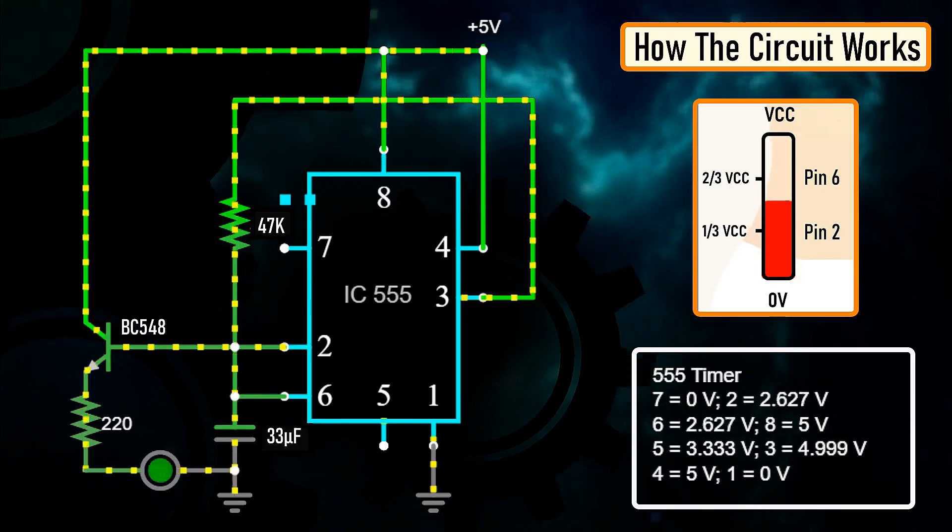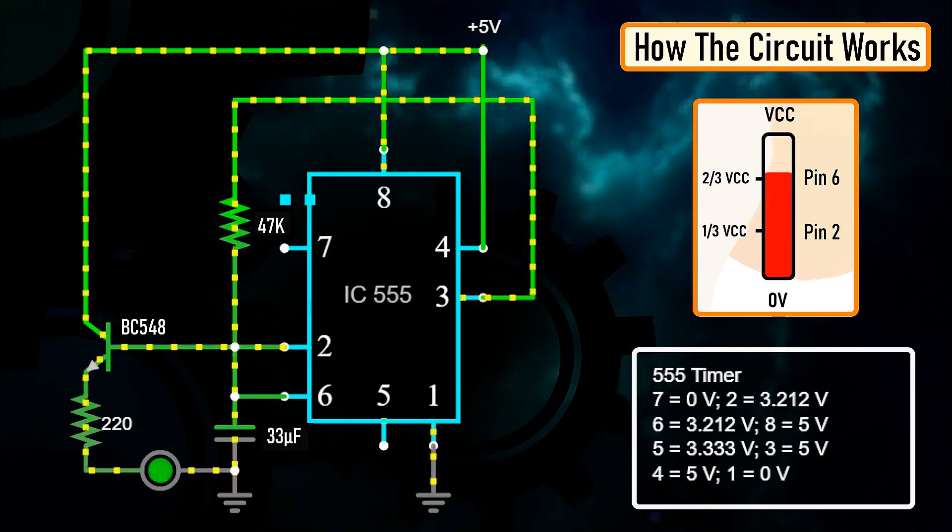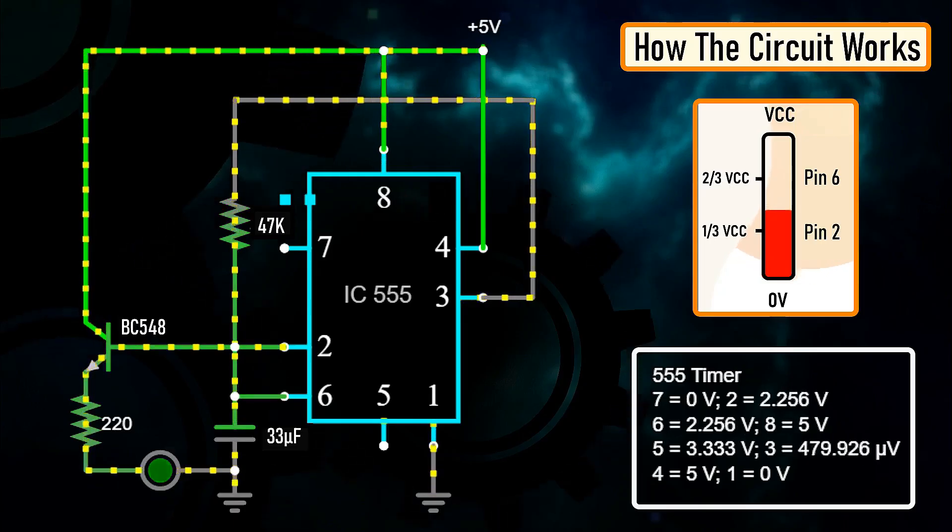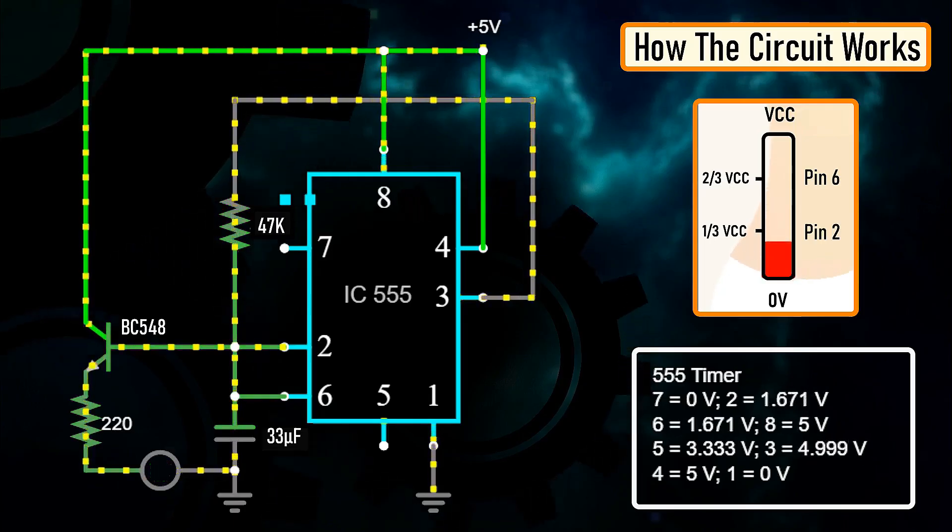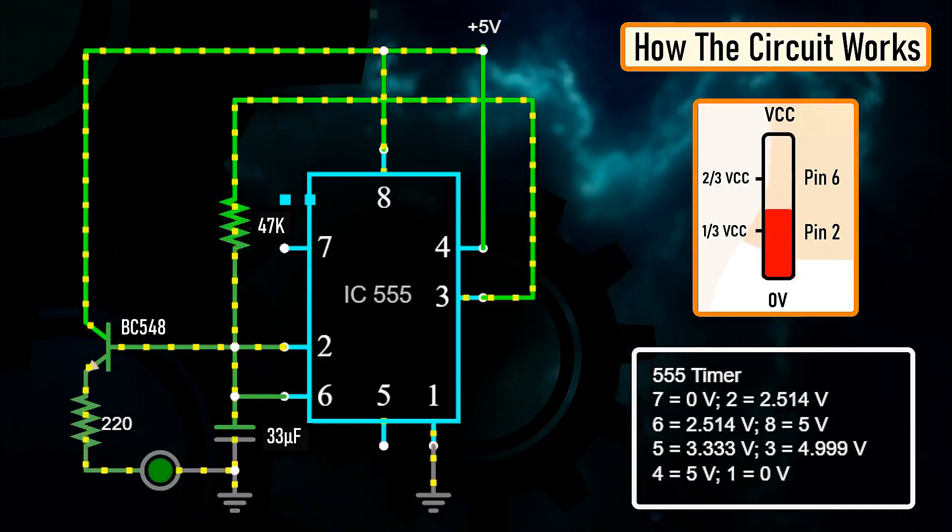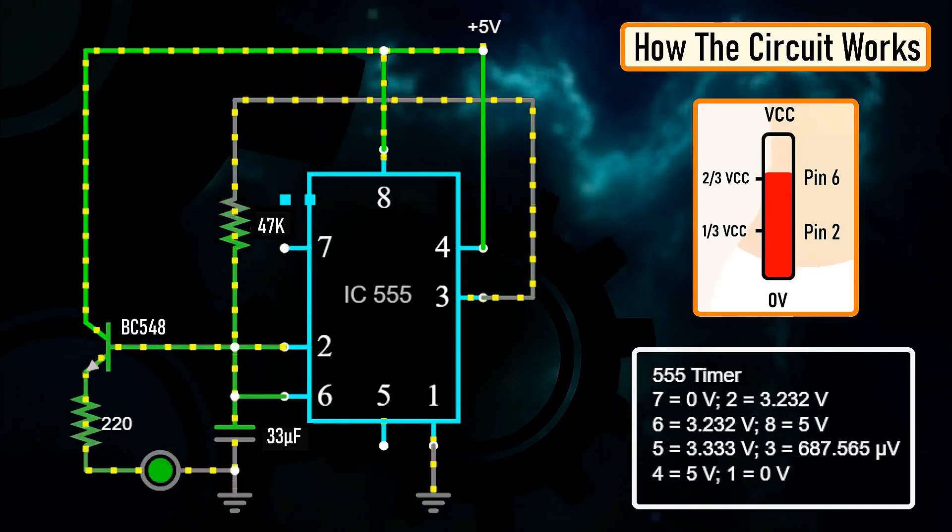Once the voltage across the capacitor falls below one-third of the supply voltage, pin number 2 turns on the output and the above cycle continues. You can hook up a multimeter to the circuit to measure the charging and discharging of the capacitor.